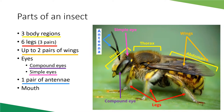Insects have one pair of antennae — antenna is the singular. This helps differentiate them from other things lumped in as bugs. Insects also have a variety of mouth types. Do they have a chewing mouth part or a sucking mouth part? This helps narrow down identification between similar-looking insects and helps determine the insect's lifestyle — how it feeds and whether it's a pest.